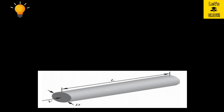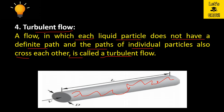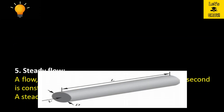A flow in which each liquid particle does not have a definite path and the paths of individual particles also cross each other is called a turbulent flow. Turbulent means random — a water particle moves randomly without a definite path, and the flow paths of particles coincide with each other. In turbulent flow, the liquid particle does not have a definite path and coincides with other water particles' paths.